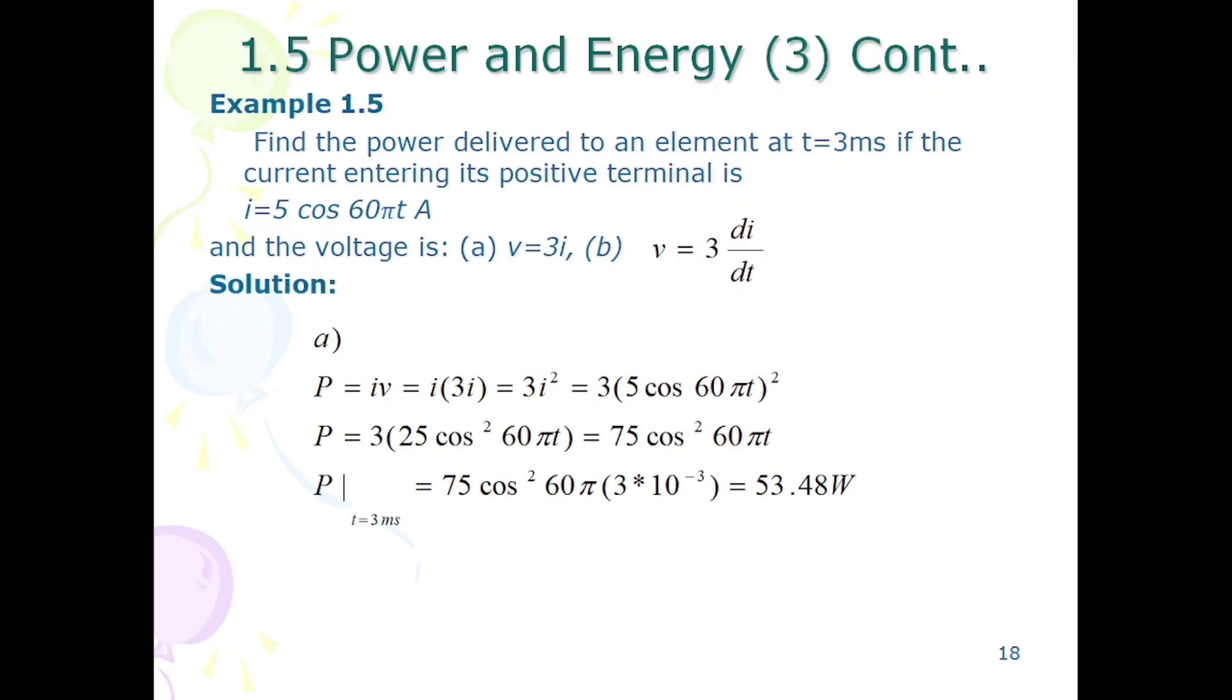The formula to find out the power is P equals vi. Now insert the value of part A voltage which is equal to 3i. Then the answer is 3i squared. Now substitute the value of i. The answer is 75 cos squared 60 pi T.